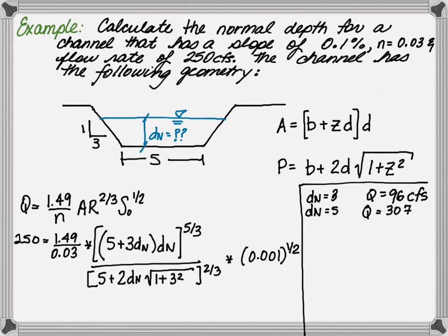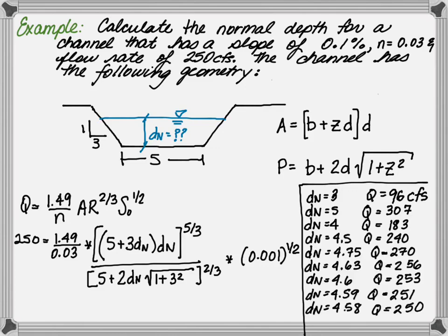Next, we would try a DN of 5 feet, and the flow rate resulting would be 307 CFS, which is not equal to 250. Now, we would pick halfway between at 4 feet, which is bisecting the depth, results in a flow rate of 183. We repeat this until we reach a DN of 4.58 feet and a flow rate of 250 CFS.